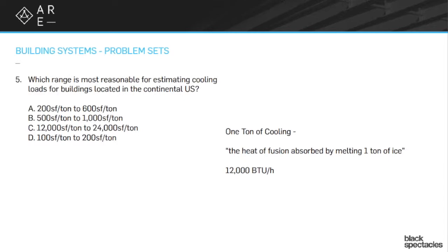The question actually is: which range is most reasonable for estimating cooling loads for buildings located in the continental US? A) 200 square feet per ton to 600 square feet per ton, B) 500 to 1,000, C) 12,000 to 24,000, D) 100 square feet per ton to 200 square feet per ton. This is really just seeing if you know the general range of how much cooling generally happens in a typical building.